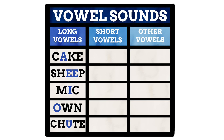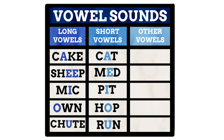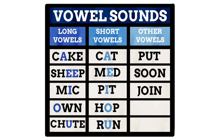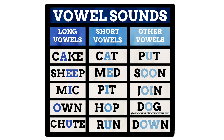We then have short vowels — when the five traditional vowels make the sounds they are most linked with. Cat, as we used earlier, is an example, where the letter A makes the A sound; this is a short A. We can hear a short E in med, a short I in pit, a short O in hop, and a short U in run. The third category, called the other vowels, is a collection of unique vowel sounds that don't fall into a pattern like long or short vowels. This includes the alternative sound U makes in words like put, the longer O sound in words like soon, the O sound in join, the O sound in dog, and the O sound in down. Going down this route, we can see that there are 15 vowels, as opposed to just the five we are taught at school.